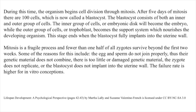The inner group of cells, or embryonic disc, will become the embryo, while the outer group of cells, or trophoblast, becomes the support system which nourishes the developing organism. This stage ends when the blastocyst fully implants into the uterine wall. Mitosis is a fragile process, and fewer than one half of all zygotes survive beyond the first two weeks. Some of the reasons for this include: the egg and sperm do not join properly, there is too little or damaged genetic material, the zygote does not replicate, or the blastocyst does not implant into the uterine wall. The failure rate is higher for in vitro conceptions.